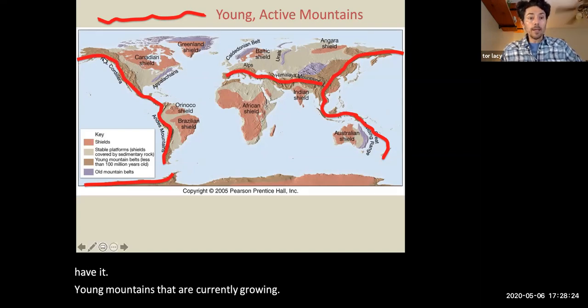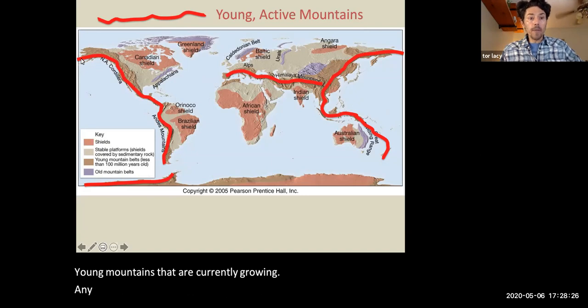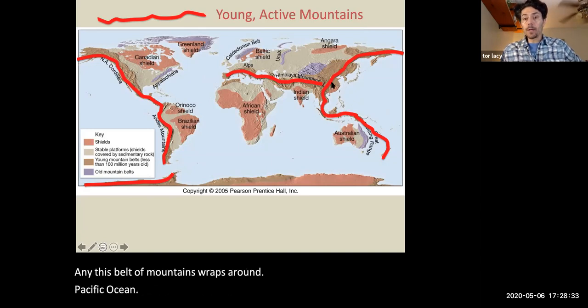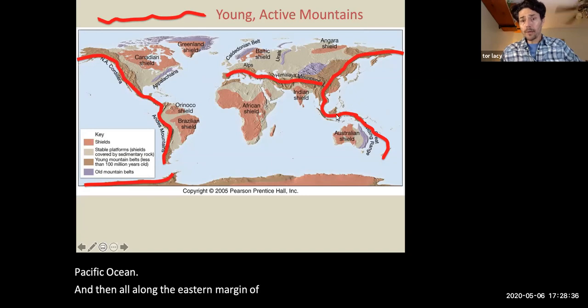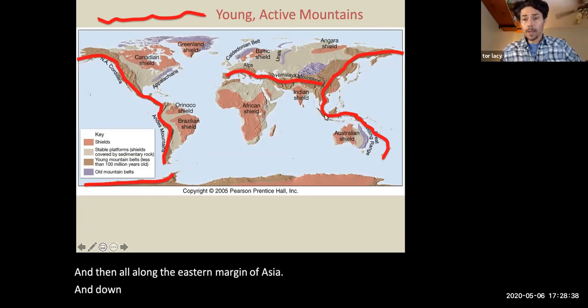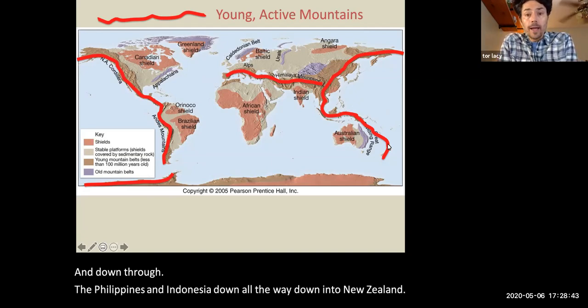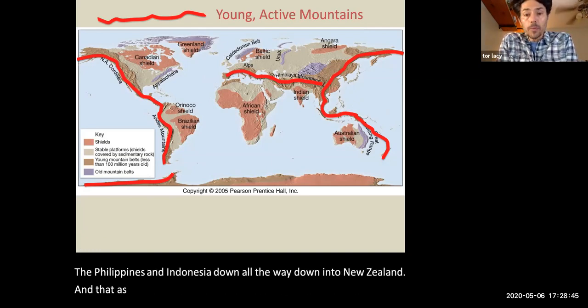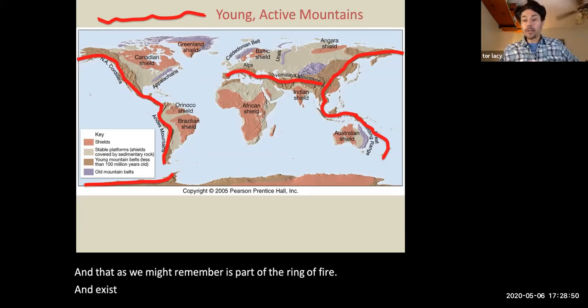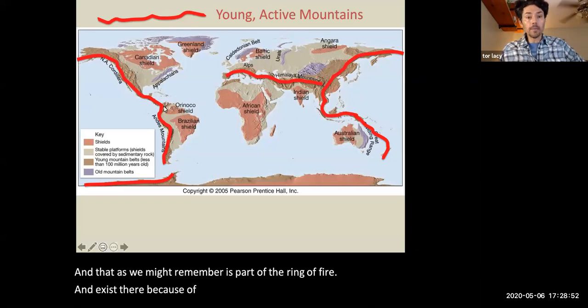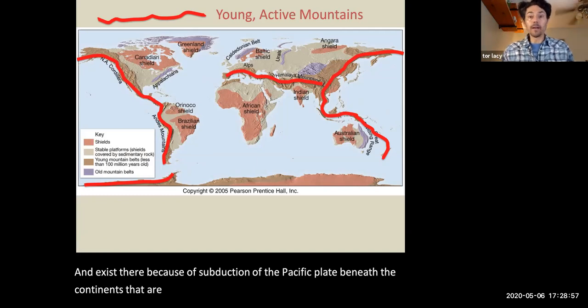This belt of mountains wraps around the Pacific Ocean, and then all along the eastern margin of Asia and down through the Philippines and Indonesia, all the way down into New Zealand. As we might remember, this is part of the Ring of Fire and exists there because of subduction of the Pacific Plate beneath the continents that are encircling it.